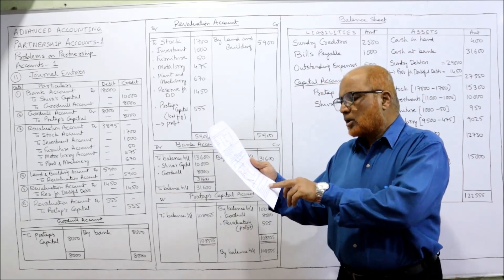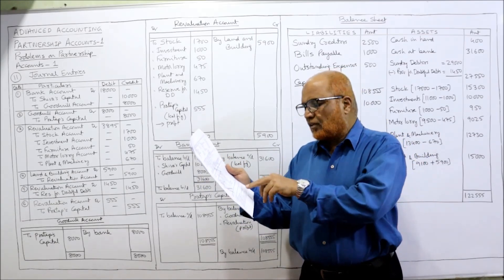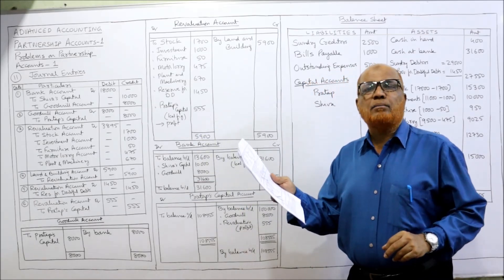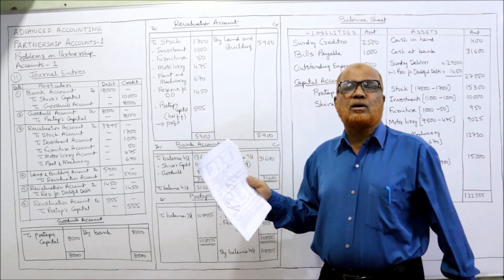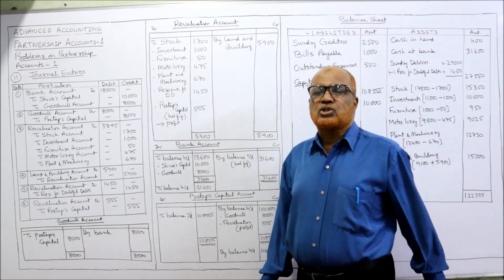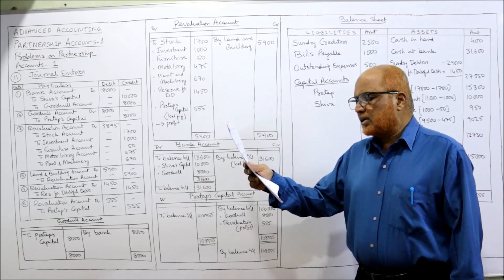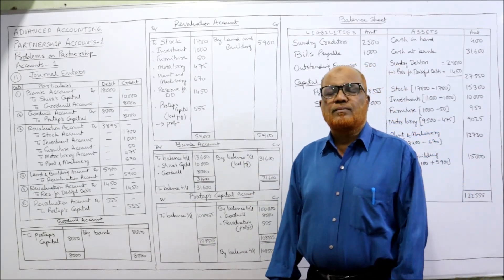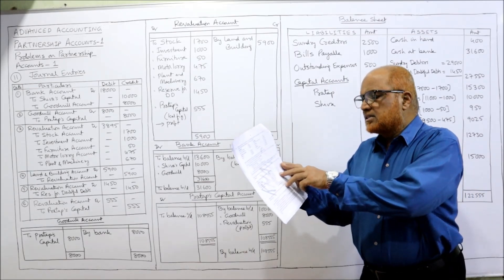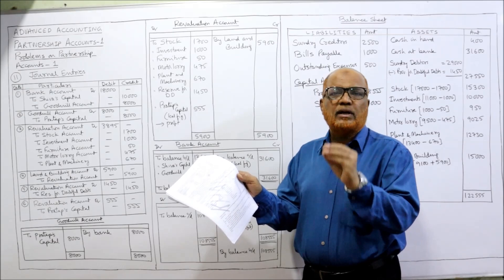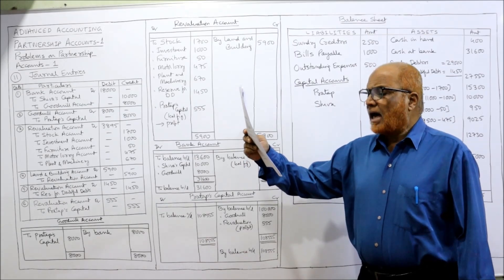Furniture, motor lorry, and plant and machinery to be reduced by 5%. Land and building to be revalued at ₹15,000 — the present book value is ₹9,100, so it needs to be appreciated. A reserve for doubtful debts to be created at 5% of sundry debtors. Sundry debtors are ₹29,000, so 5% of ₹29,000 = ₹1,450 is the provision for doubtful debts.